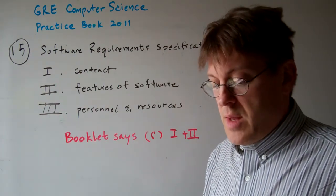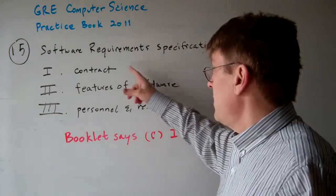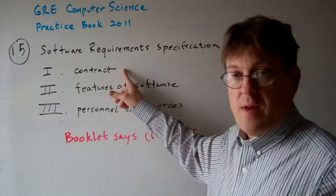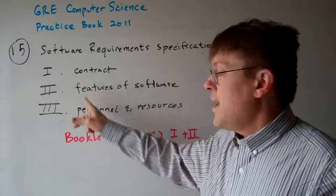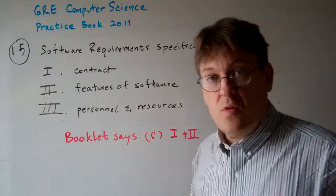I don't know. I guess it's a debatable thing, but the book says that this is there. I say it's not, but the answer for this one is C: one and two. I say it's just two.